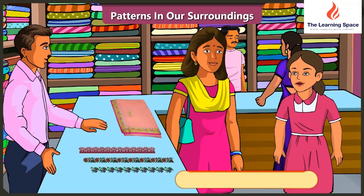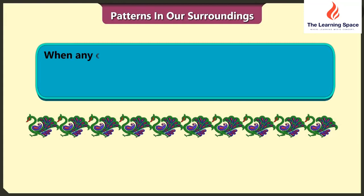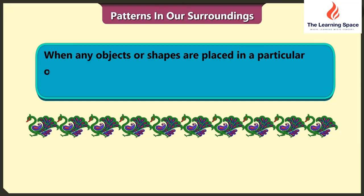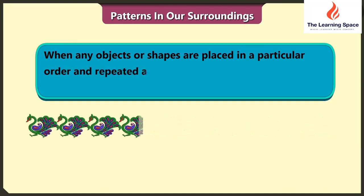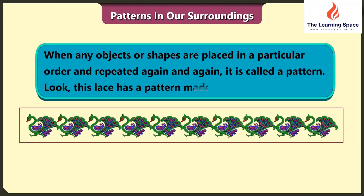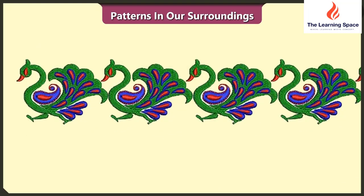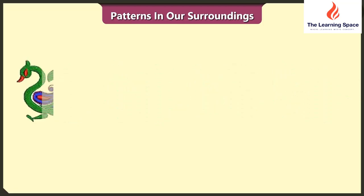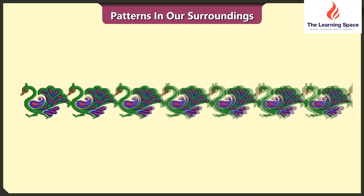Mummy, what is a pattern? When any object or shapes are placed in a particular order and repeated again and again, it is called a pattern. Look, this lace has a pattern made of peacocks. Oh yes, here the peacock motif has been repeated again and again.